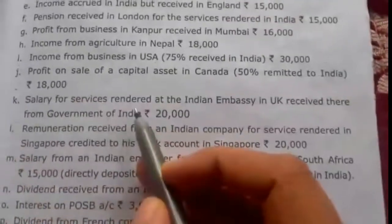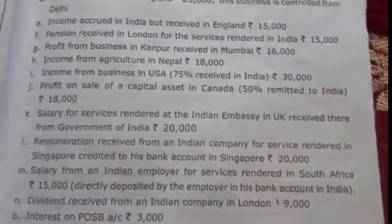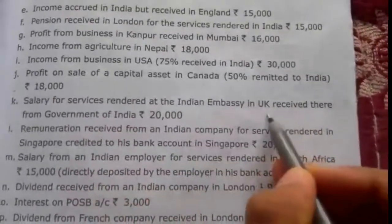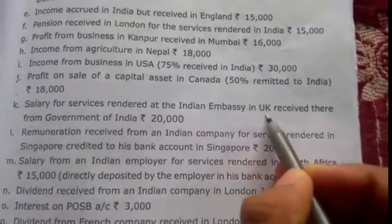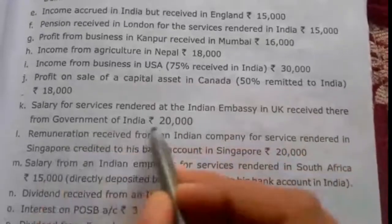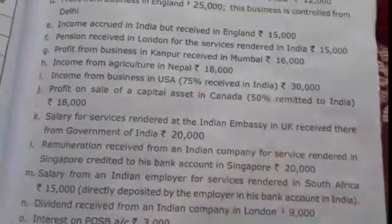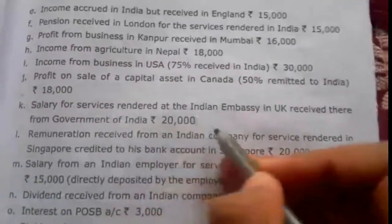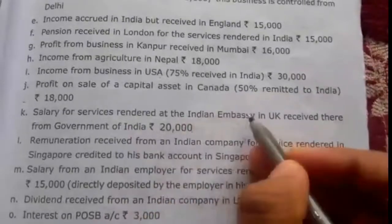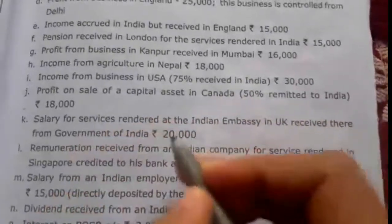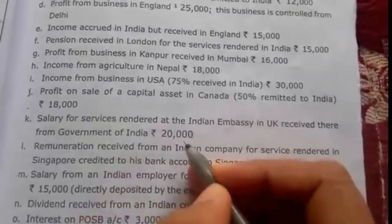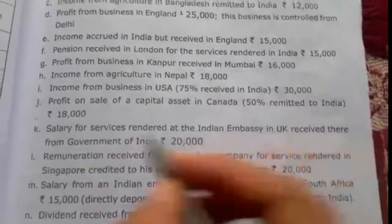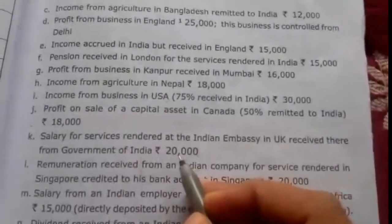Eleventh, salary for services rendered at the Indian embassy in UK received there from the Government of India Rs. 20,000. The Indian embassy in UK is owned by the Government of India, so the income is deemed to be accrued in India. Therefore it is taxable in the hands of all three cases.